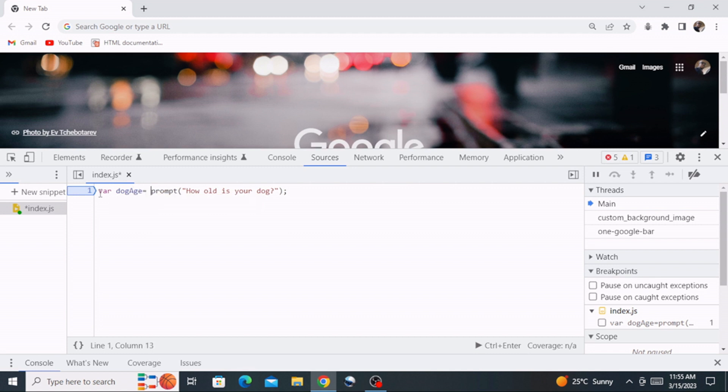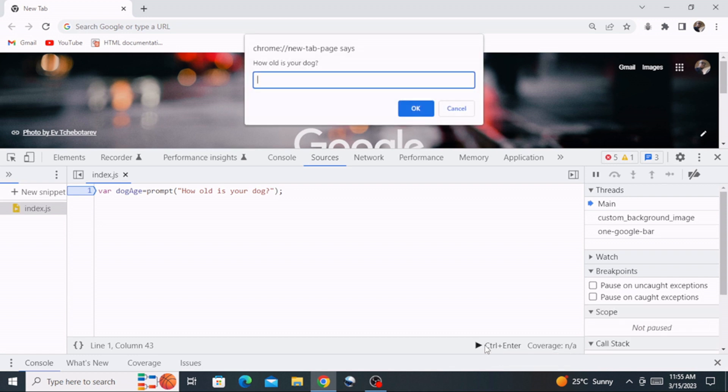So whatever the age will be provided by the user will be equals to dog age. So now the next thing, just before we go ahead, let me just put this to a test. Click control enter. Let's check if it's working. So here is that prompt, everything is working fine, we can continue.